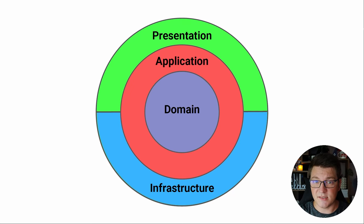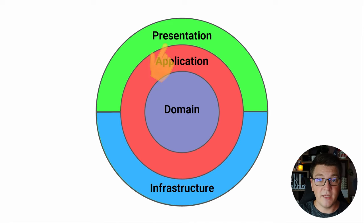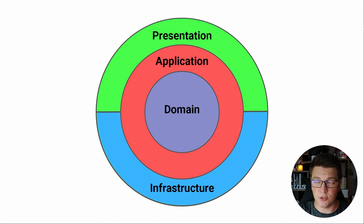Before I talk about vertical slices, let's briefly mention the clean architecture — with the domain layer at the core, then the application layer one level above, which contains the application use cases. We have the presentation layer, which is the entry point into our system, which passes requests to the application layer, which orchestrates the domain logic, and then we have the infrastructure layer, which deals with external concerns. You will often see the clean architecture represented using concentric circles, and the most important concept is the direction of dependencies.